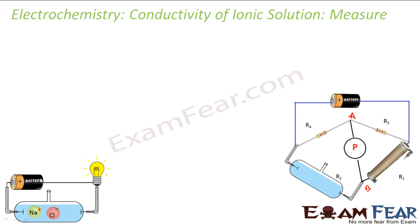Similarly, here also we'll use the Wheatstone bridge to find the resistance of the ionic solution. But the problem with ionic solution is that it is a liquid — it doesn't have a definite shape. How will you find l and A? Because resistance R = ρ × l/A. If it doesn't have a definite shape, how will you find the resistance?